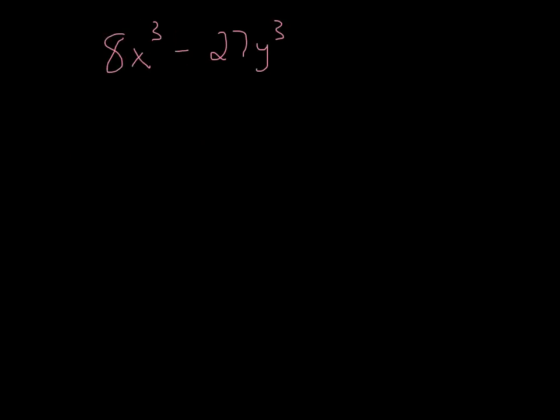Let's move to the next one. This one tends to give people a little bit harder of a time, but again, let's just break it down. What cubed gives me 8x cubed? So that's 2x cubed. And what cubed gives me 27y cubed? That's 3y. So I've got my first and my second.